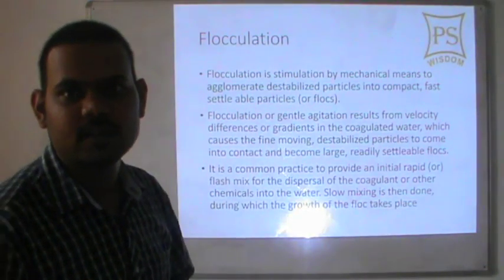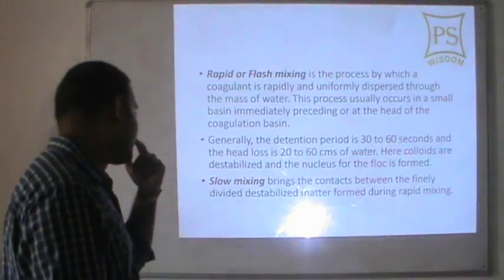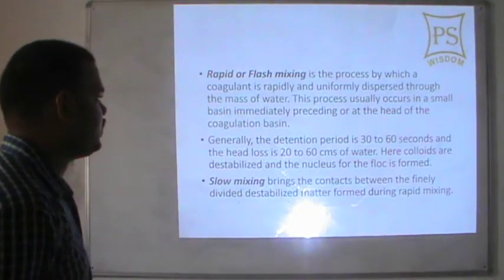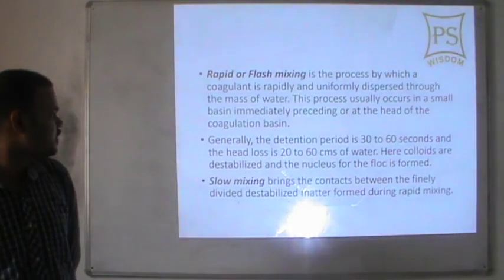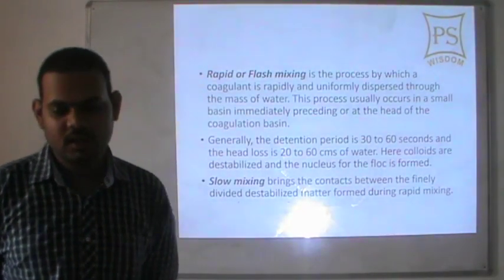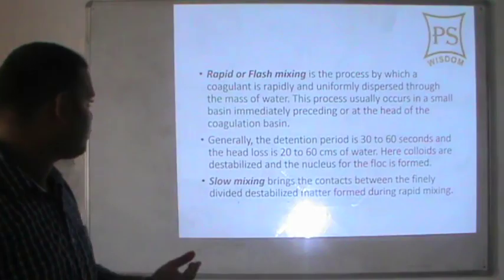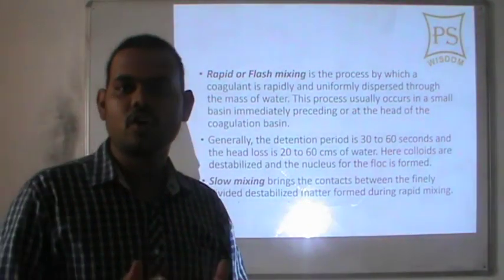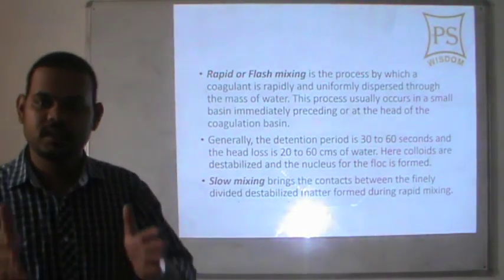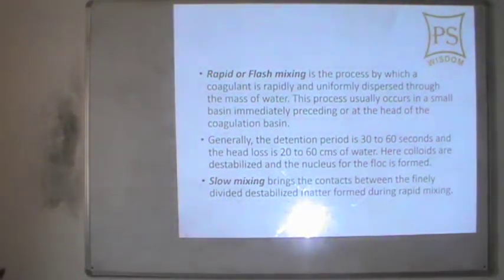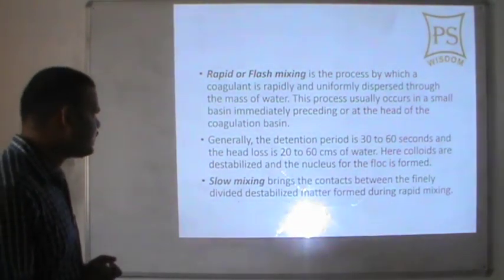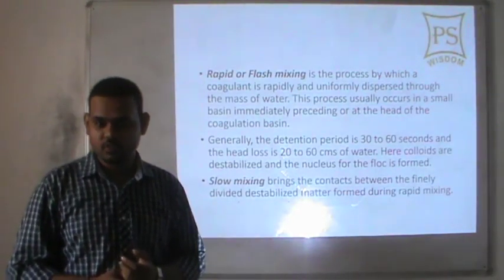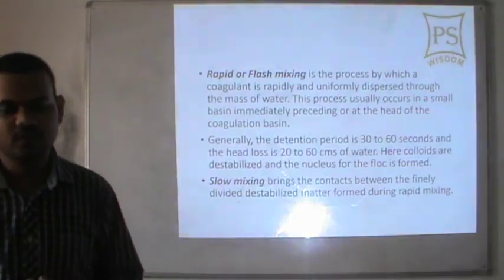Rapid or flash mixing is the process by which coagulant is rapidly and uniformly dispersed through the mass of water. This process usually occurs in a small basin immediately preceding or at the head of the coagulation basin — when water enters the coagulation basin, it is mixed at the entrance. Generally the retention period is 30 to 60 seconds and the head loss is 20 to 60 cm of water.